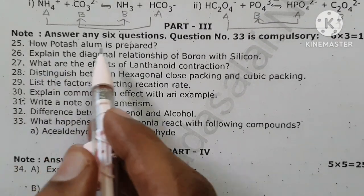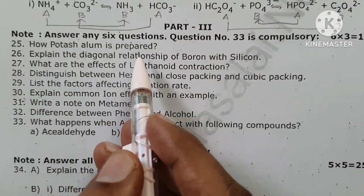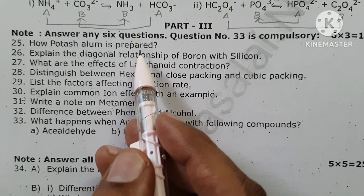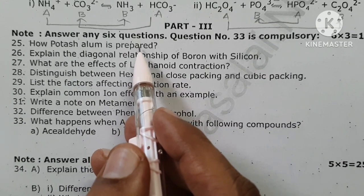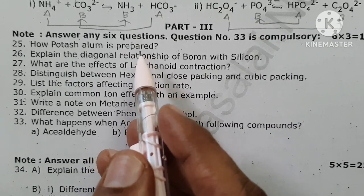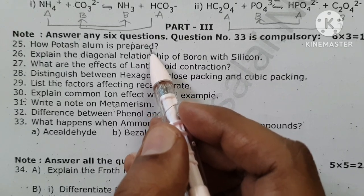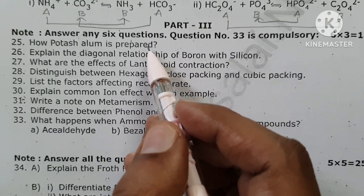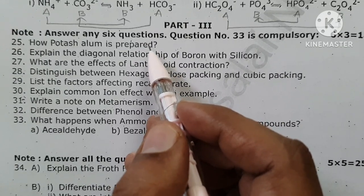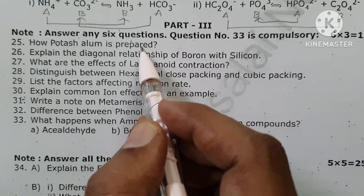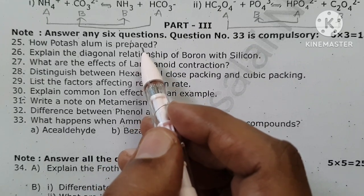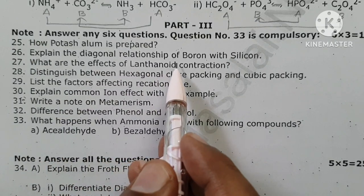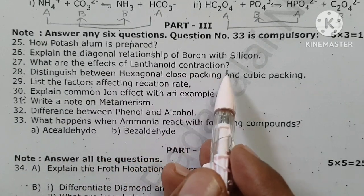How is potassium alum prepared? Potassium alum is prepared from alunite. Alunite has the molecular formula K₂SO₄·Al₂(SO₄)₃·24H₂O. Finely powdered alunite is treated with sulfuric acid to prepare it. Also, explain the diagonal relationship of boron with silicon.